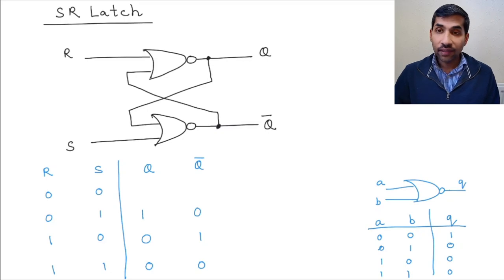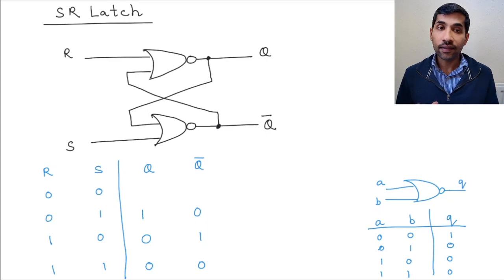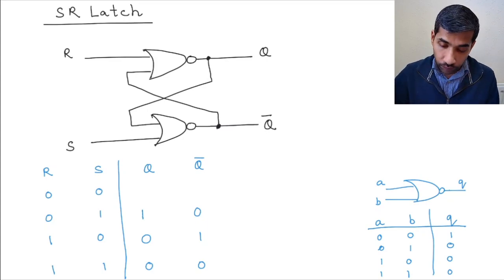Now, this is the interesting part of the latch. What happens when R and S both are 0? So let's look at this step. So R is 0 and S is 0.